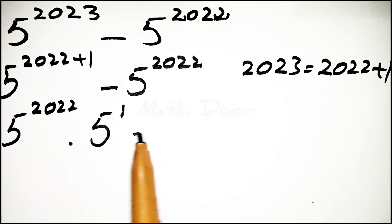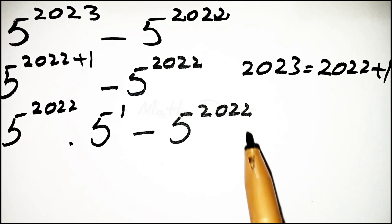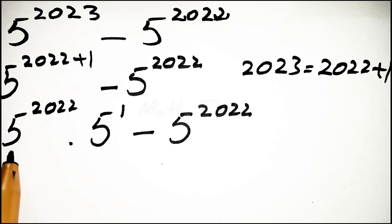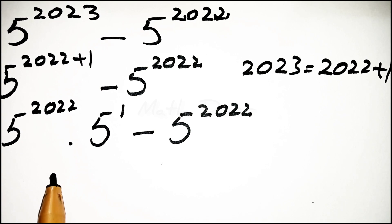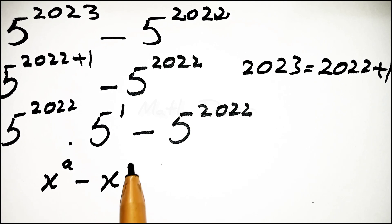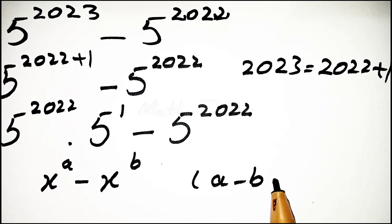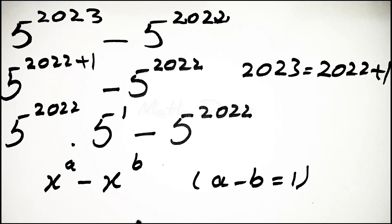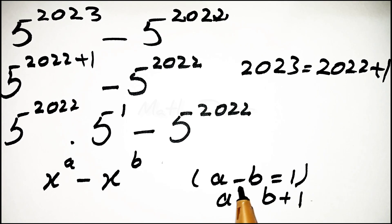Now we write this as 5 power 2022 dot 5 power 1 minus 5 power 2022. We take 5 power 2022 as a common. We must understand this step: the general rule is x power a minus x power b, where a minus b is equal to 1.